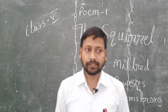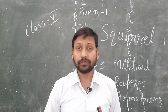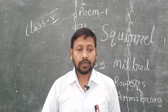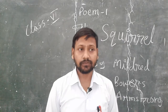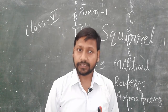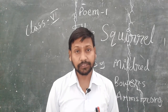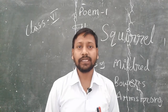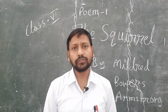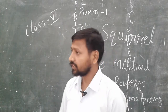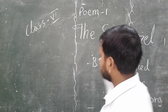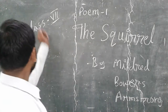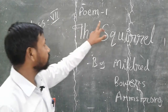Now today, as everyone knows, online classes are going on. You have been taught till now some reading parts — the first chapter has been completed and some grammar part also we have completed. Now today we are going to complete the first poem, which name is The Square. You can see here this is class 7th.